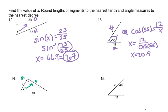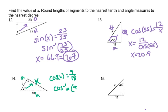Opposite, adjacent, hypotenuse. Cosine X equals 9 over 18, adjacent over hypotenuse. Remember, it will be the inverse, so cosine negative 1 of 9 over 18. We put that in our calculators and we'll get 60 degrees.